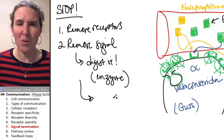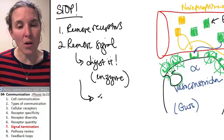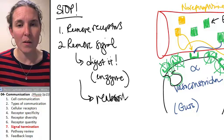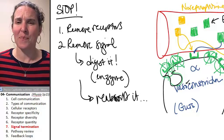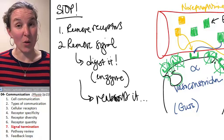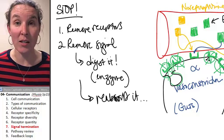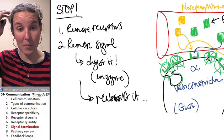So digesting it is one way, you can also reabsorb it. But in my little example here, that doesn't quite make sense because where would we reabsorb it to? When we talk about neurons and neuron signaling, then that will make a little more sense.